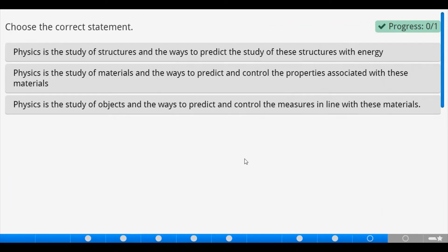With that, we've come to the end of the class. But we will now go without dealing with choosing the correct statement in terms of the summary. Physics is the study of structures and the ways to predict the study of these structures with energy. That statement is wrong. Physics does not only deal with the study of structures. It can also deal with the study of materials. So, let's check the second statement. Physics is the study of materials and the ways to predict and control the properties associated with these materials. Yes, the statement is correct. But we cannot leave the first statement out.